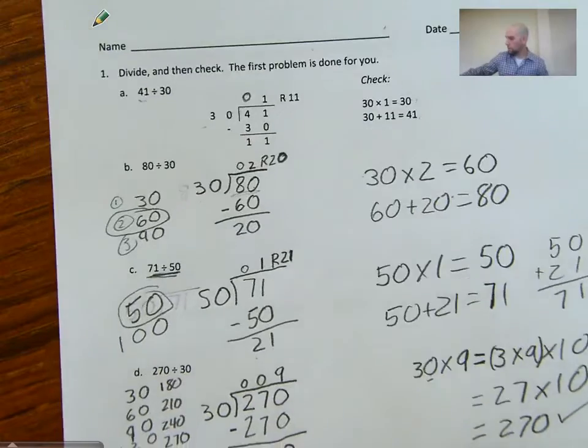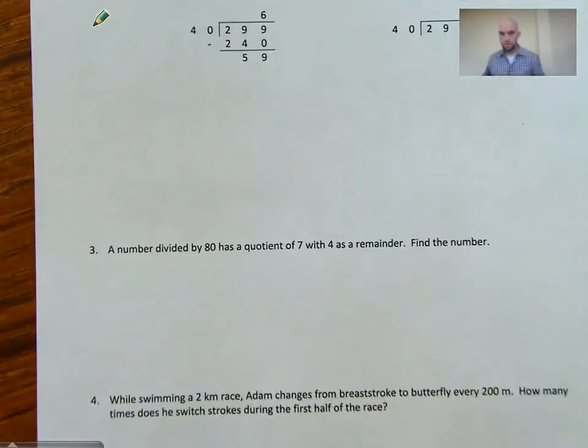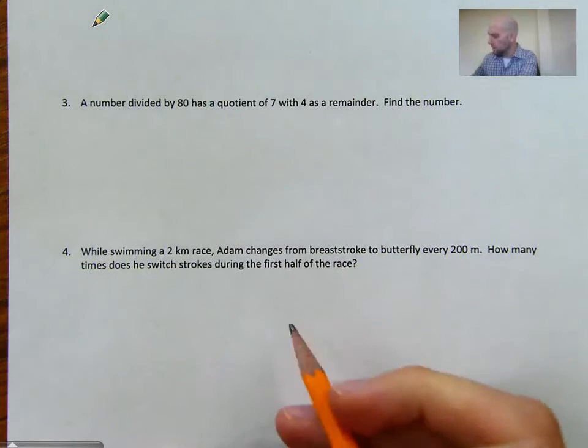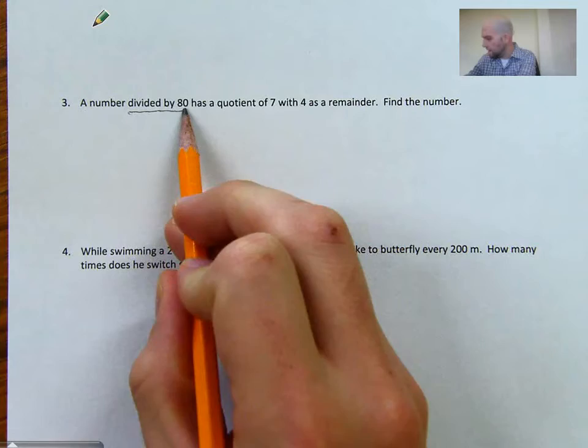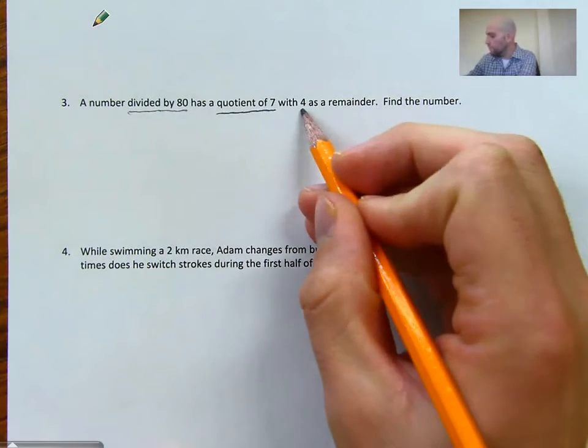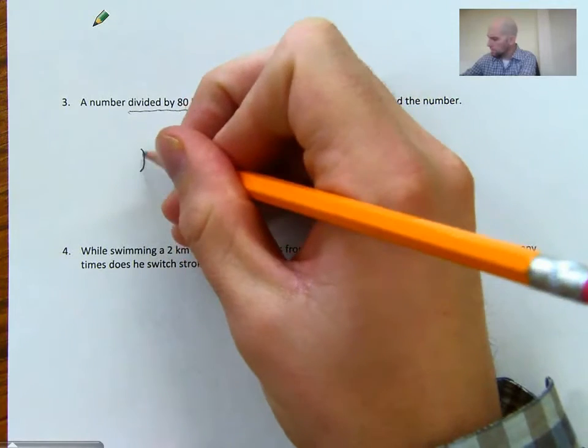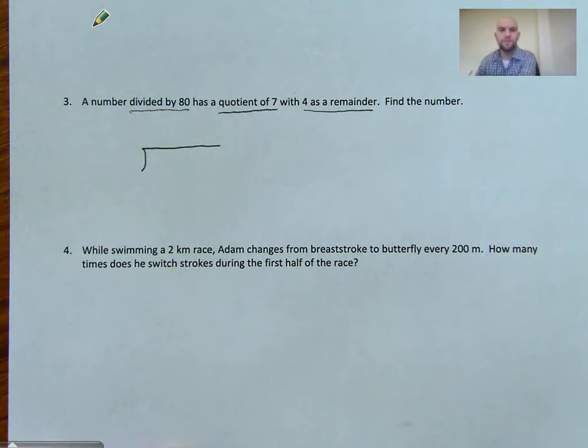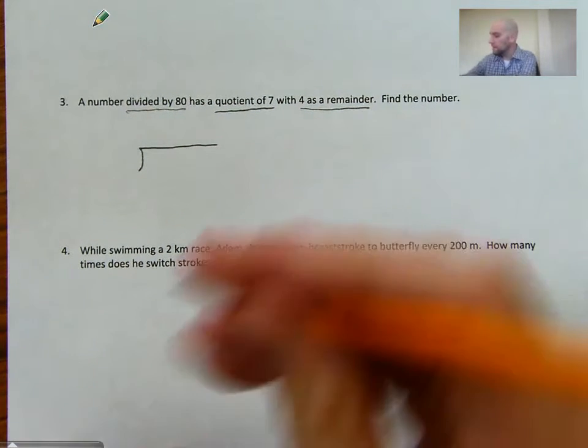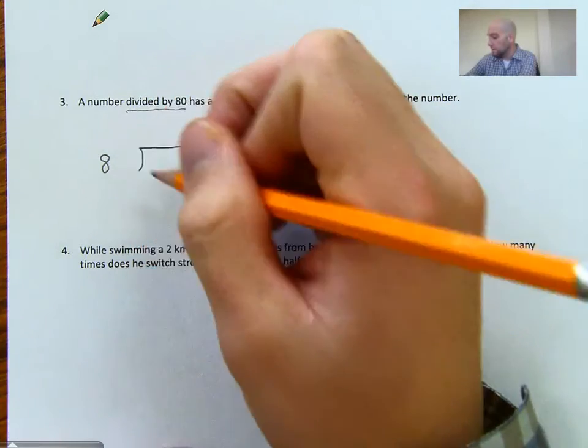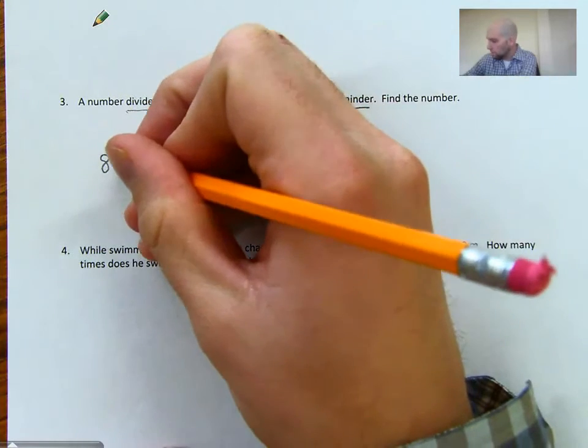All right, so let's try a word problem here. And I think we're going to try this number 3. I like the way that they did this. It says, a number divided by 80 has a quotient of 7 with 4 as a remainder. Find the number. So we have a lot of words here we want to keep in mind. So a number divided by 80, with a quotient of 7, 4 as a remainder. We want to find what the number is. So let's make ourselves a division problem. And we're going to fill in the parts that we have. So a number divided by 80. We know that the part that's divided by is on the outside. This divided by tells us that is our divisor. Our divisor goes on the outside of this box. So we're going to do 80 right here.